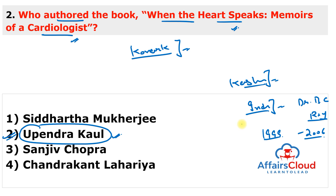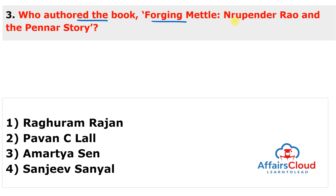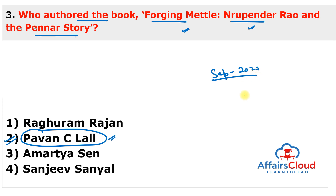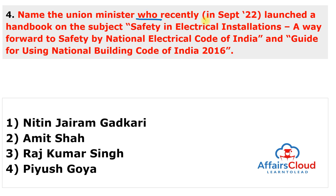The next question: Who authored the book 'Forging Metal: Narupinder Rao and the Panar Story'? This book is authored by senior journalist Pavansi Lal. It is set to be released in September 2022 and will be published by HarperCollins Publishers India. The book focuses on how a business is built into a large organization on the foundation of value and sustainability. It is a story of Narupinder Rao, Chairman of the Board at Panar Industries Limited, and his entrepreneurial journey.